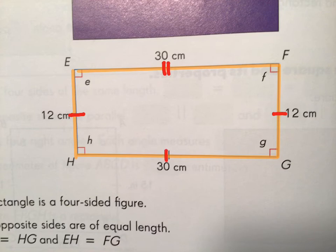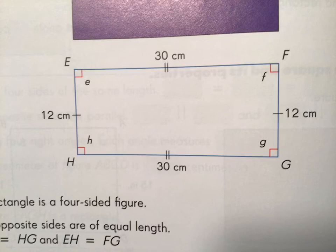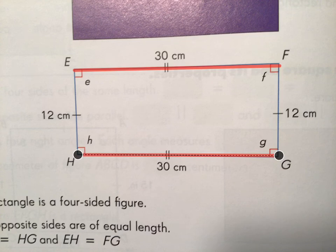So in a rectangle, opposite sides are also parallel. So if we look at side EF, EF is parallel to HG, and EH is parallel to FG. So opposite sides are parallel, and as you can see, a rectangle has two pairs of parallel sides. So here's one pair, here's the second pair, so it has two pairs of parallel sides.